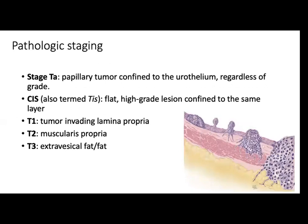This is a representative image of how to stage bladder cancer. CIS is a flat, high-grade lesion confined to the same layer. For T1, it's the lamina propria. T2 is the muscularis propria. T4 is the extravesical fat and those outside of the bladder.